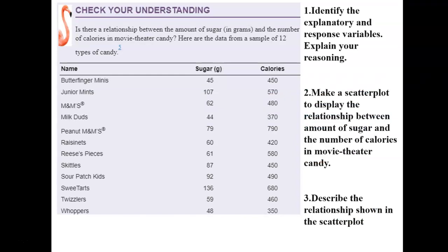Let's try this on our own. This problem is about candy — they want to know if there is a relationship between the amount of sugar and the number of calories. For this check your understanding, pause the video and answer three questions: identify the explanatory and response variables and explain your reasoning; make a scatter plot to display the relationship; and describe the association.